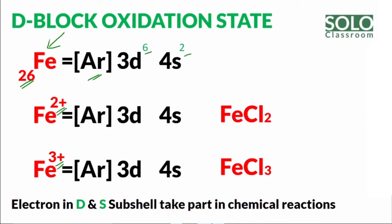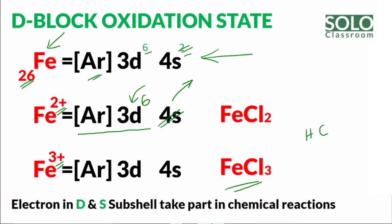For Fe2+, the two 4S electrons are lost, giving the configuration AR-3D-6. For Fe3+, one additional electron is lost from 3D, giving AR-3D-5. In FeCl3, the oxidation state of iron is 3+. Fe3+ has the subshell electronic configuration AR-3D-5.